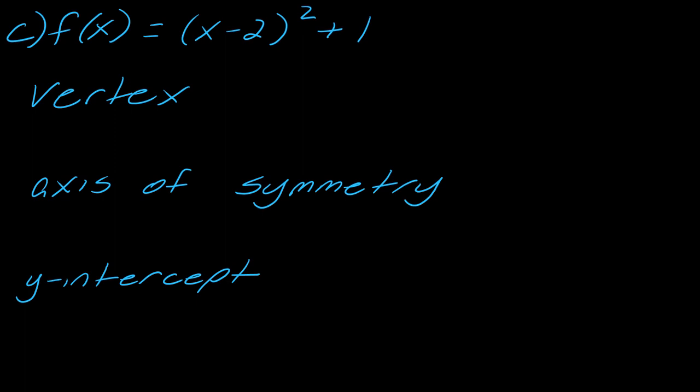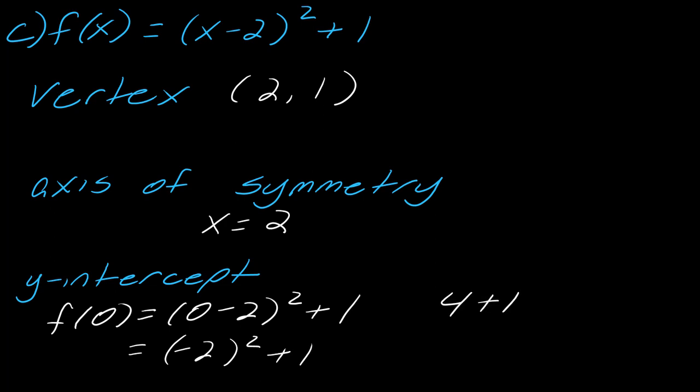So now let's go to the next one. Same thing, starting with the vertex. The vertex in this case is (2, 1). My axis of symmetry is x = 2. Don't forget that x. And then to find my y-intercept, I plug in the 0. Again, maybe you want to pause the video here just to figure that out on your own. And so I get (-2)² + 1. So this is 4 + 1, which is 5. So just to be nice and explicit, my y-intercept is (0, 5).